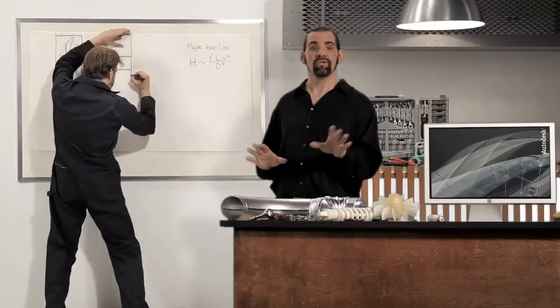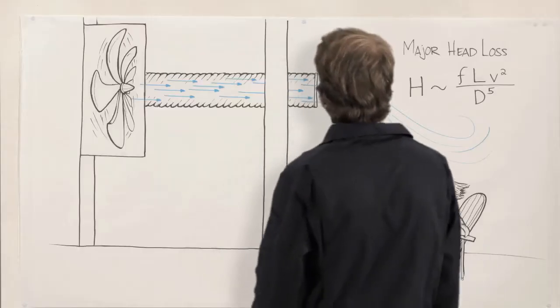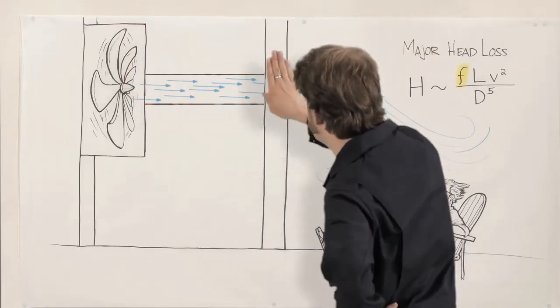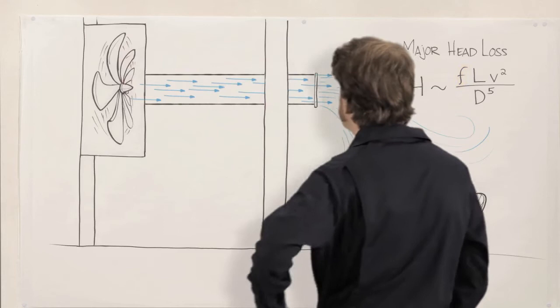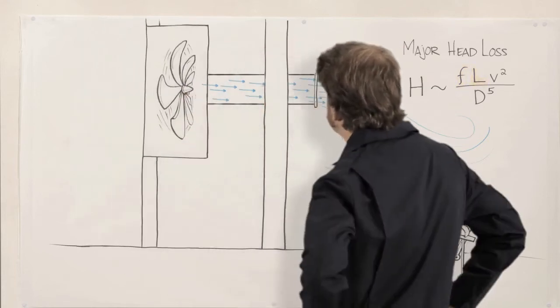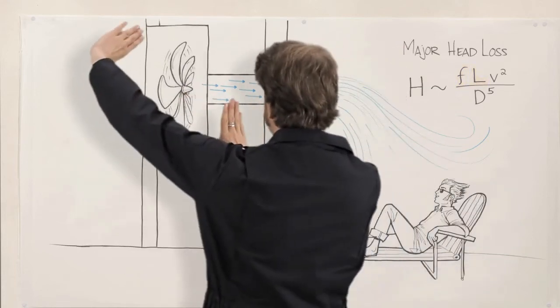Let's say you're pushing air through the ducts in a building. To reduce major head loss, you can make the duct smoother to reduce surface friction. You can reduce the length. And for a big improvement, you can reduce the velocity.